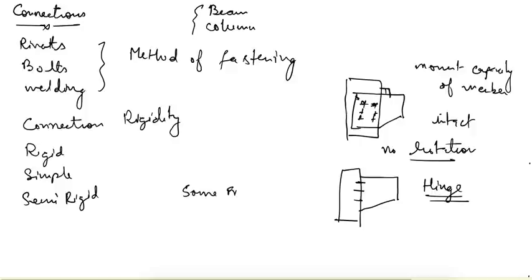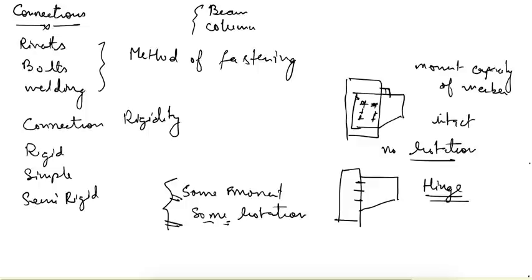In actual conditions, every joint or connection behaves as semi-rigid — it carries some moment and allows some rotation. But depending on whether the moment carried is more than the rotation, we classify it as a rigid connection; if rotation is more than the moment, we call it a simple connection. We normally divide into rigid or simple to keep the design simple.